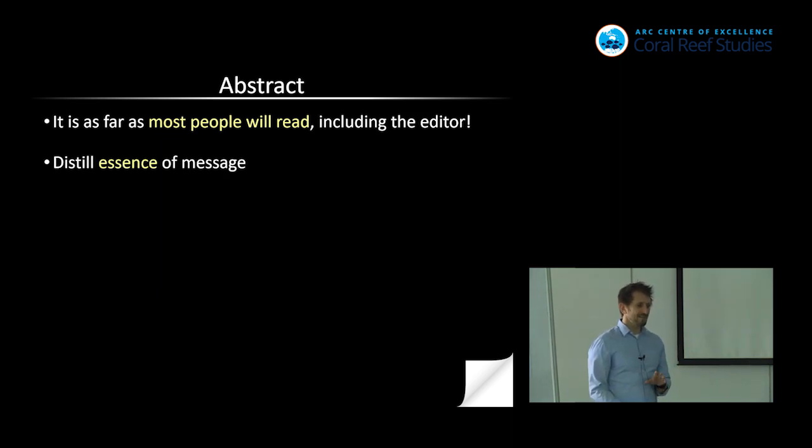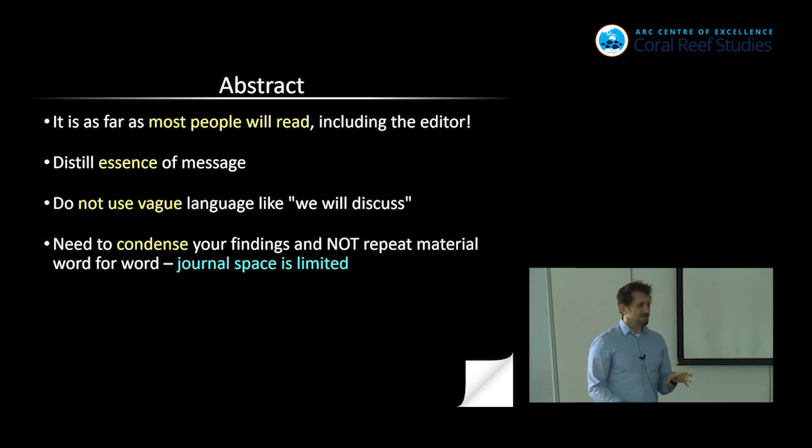So it's a really important part of the process. You're meant to distill the essence of the message. Don't use vague language like we will discuss. Tell me what you've actually done or what you will do. Vague things aren't helpful here. You've got 300 words to convince someone why this is really the most important thing they've ever read. You need to condense your findings and not repeat material word for word.